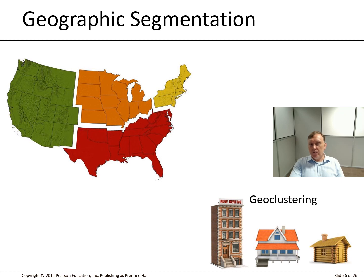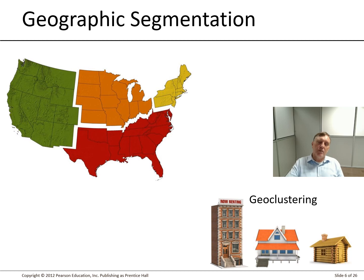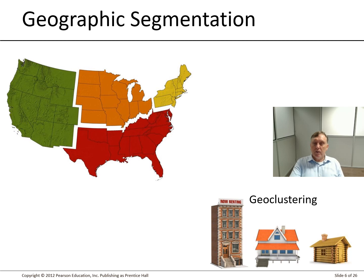Geographic segmentation is quite obvious — it can be based on a country or region. We also have geo-clusterings, where it's a group of places that are automatically brought together, such as large cities that may be closely connected.